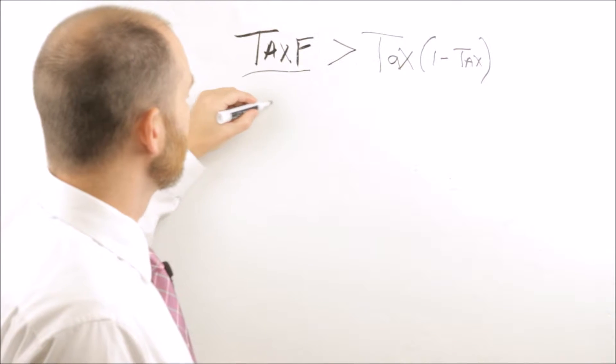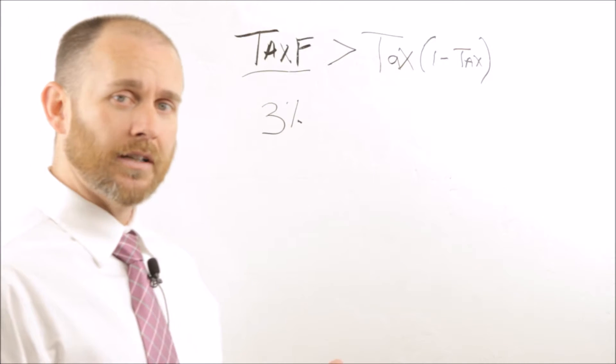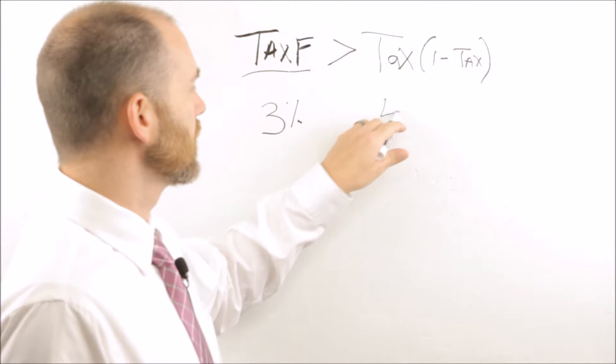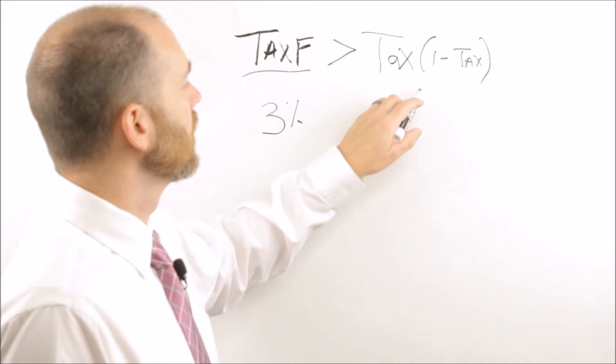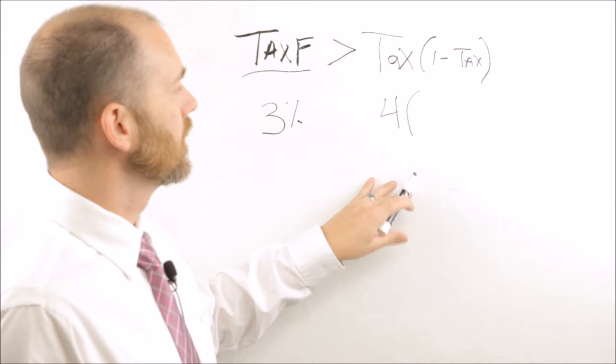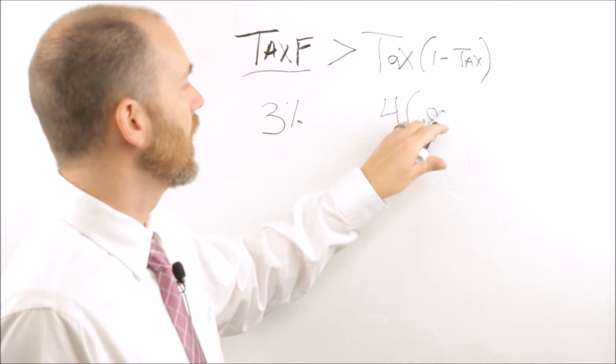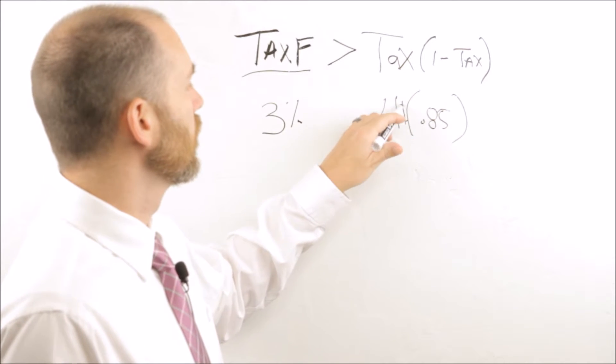If you had a yield of 3% that was tax-free and a 4% taxable bond at a 15% tax rate, then that would be one minus the tax rate, which is 0.85, times that 4%.